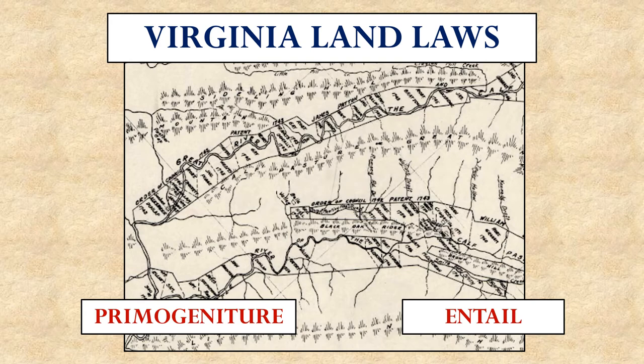This slave agriculture society was sustained by certain laws that covered the inheritance of land in Virginia. One of those is the idea of primogeniture. This simply meant that when a landholder died, his land was inherited solely by his oldest male heir. This kept vast estates intact rather than being chopped up into smaller pieces among all the children, which is important because a slave economy relies upon large tracts of land being worked by large numbers of people.